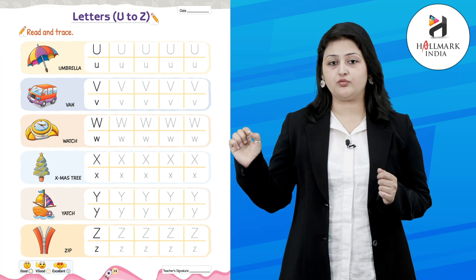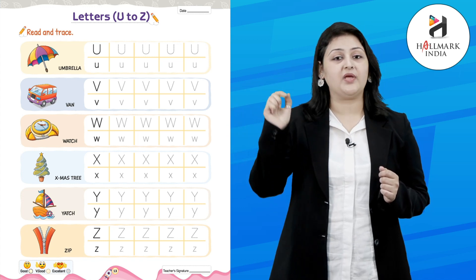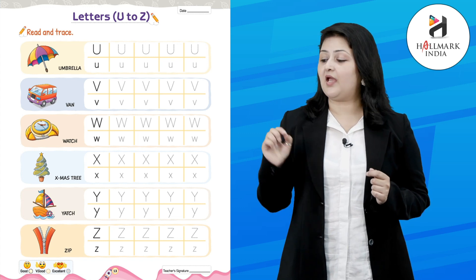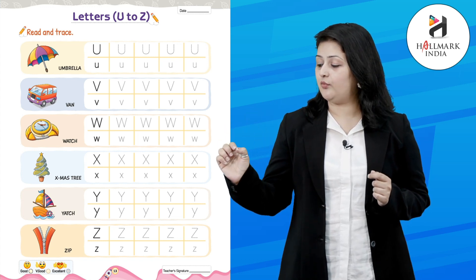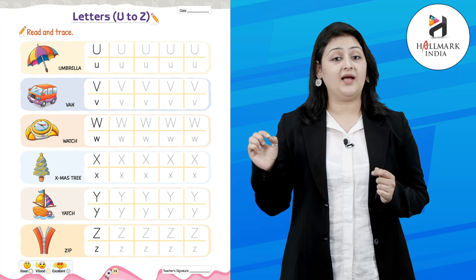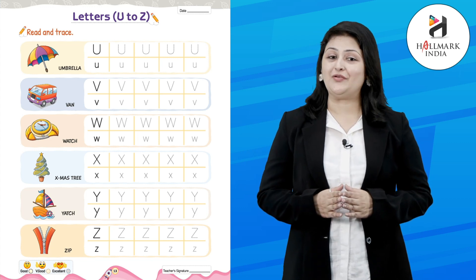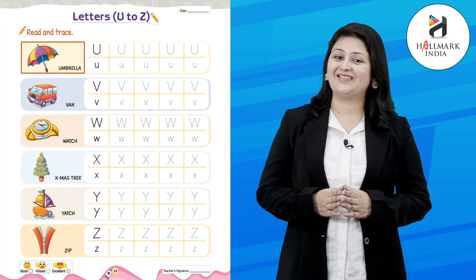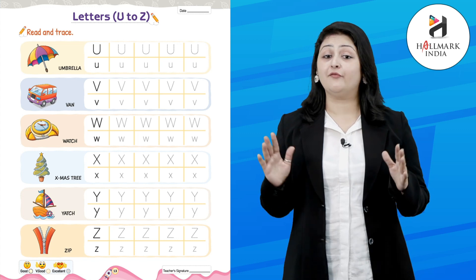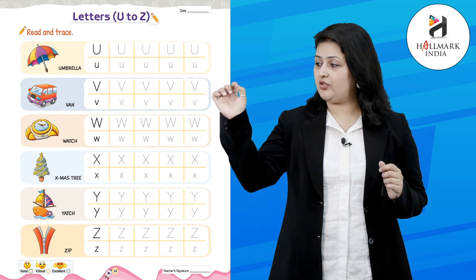We need to trace the capital U like this. That makes the capital U. And we need to trace the small U like this. That makes the small U. U for umbrella.